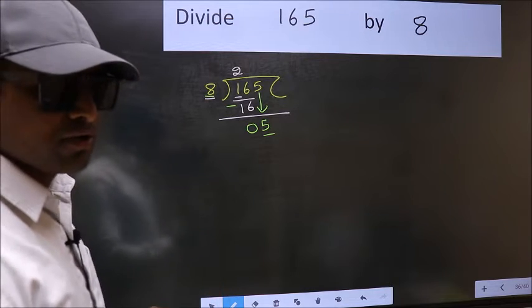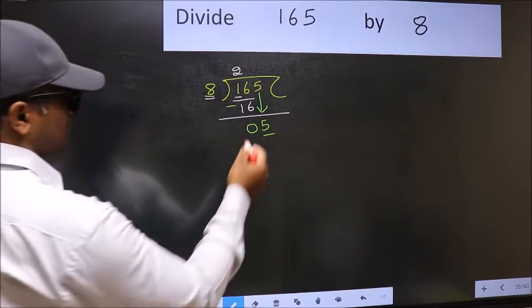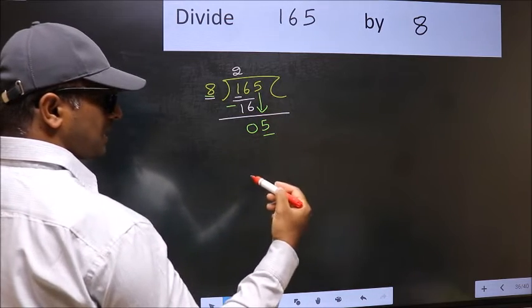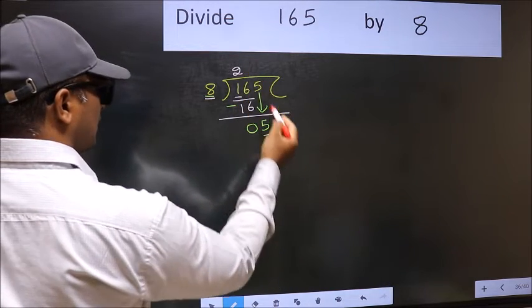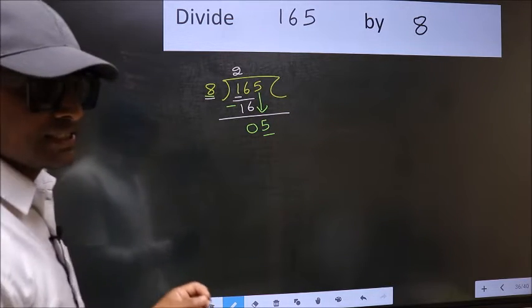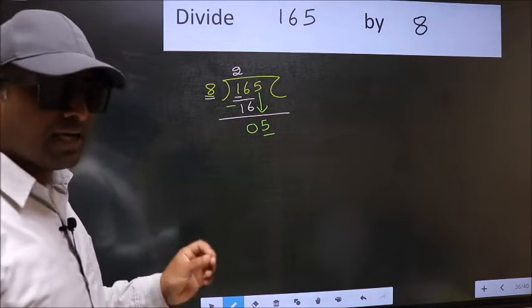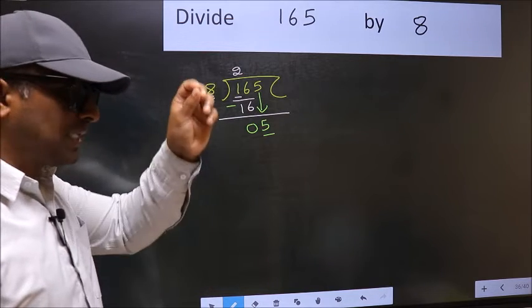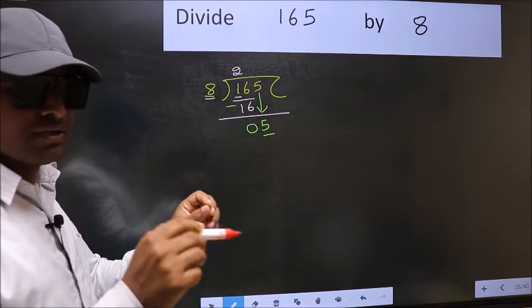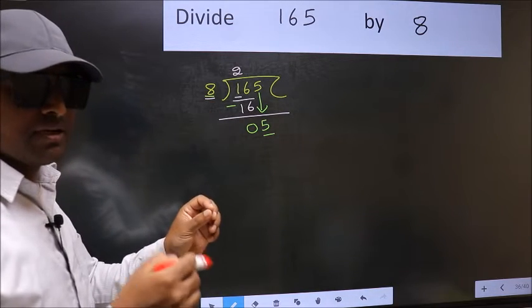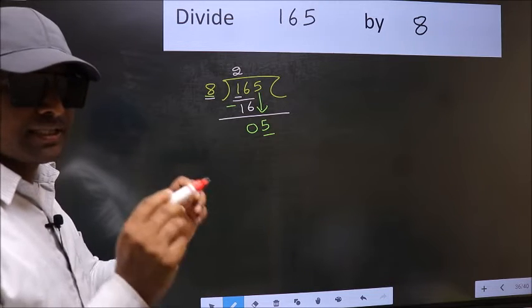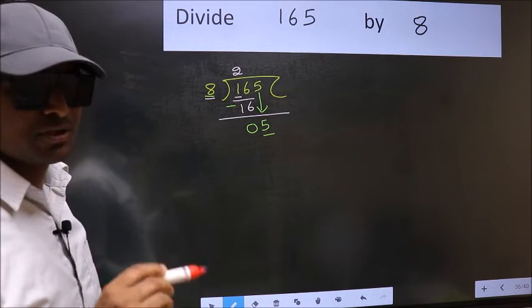Which is wrong. Why is it wrong? Because you just brought this number down, and in the same step you want to put dot and take 0. I repeat: bringing the number down and putting dot take 0, both at the same step - you should not do.